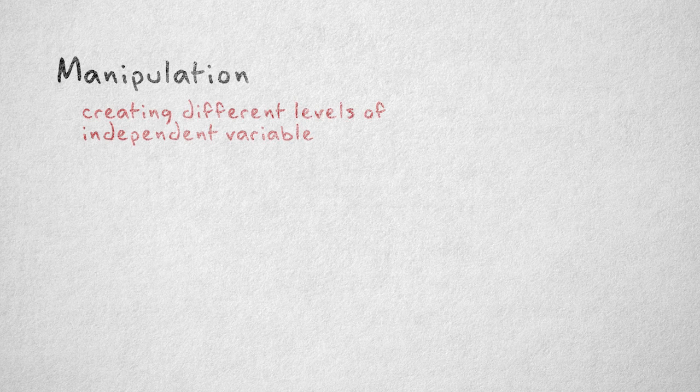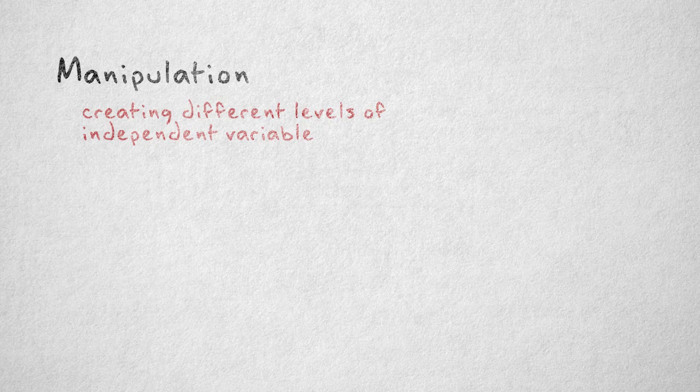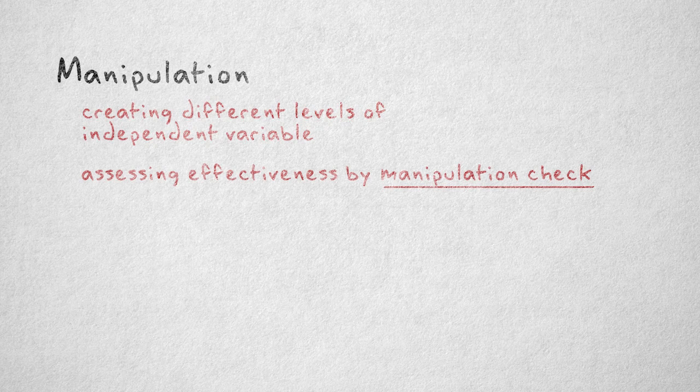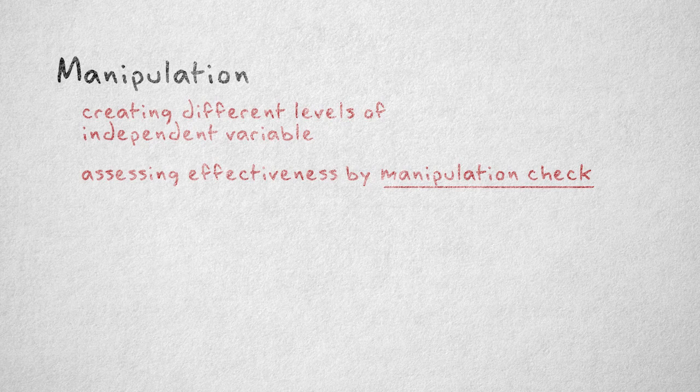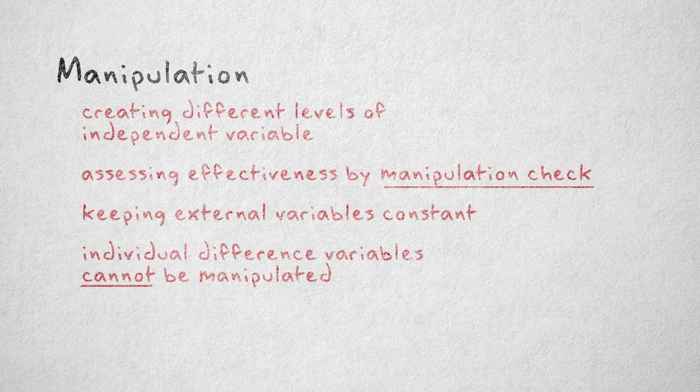So to summarize, manipulation is about creating different levels or conditions that represent different values of the independent variable. Effectiveness of a manipulation can be assessed using a manipulation check. Control means keeping external variables the same across conditions. For individual differences variables, manipulation or experimental control is not possible.